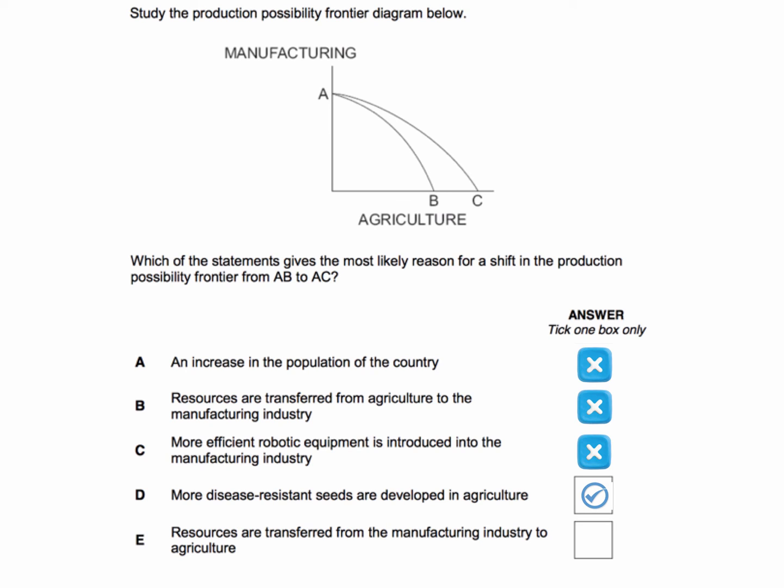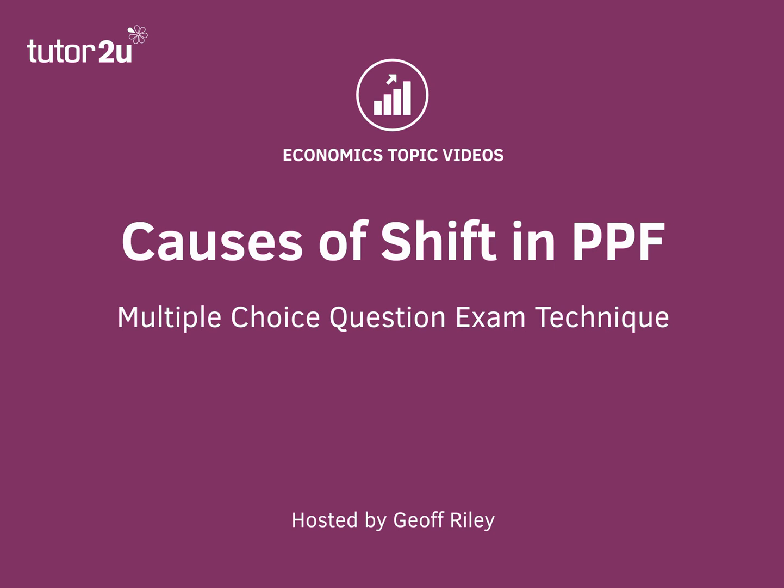Let's just check answer E: resources transferred from manufacturing to farming — that of course increases output in farming, but as we said before, a transfer of resources is a movement along the PPF and not a shift. So E is wrong. The correct answer is D. That's how we'd answer this question on causes of shifts in the PPF.